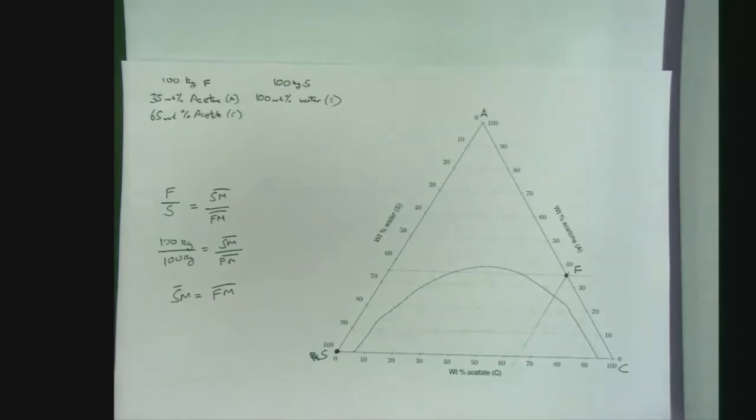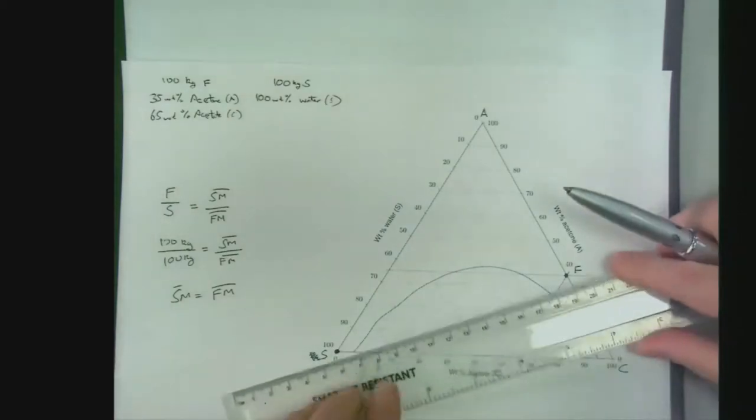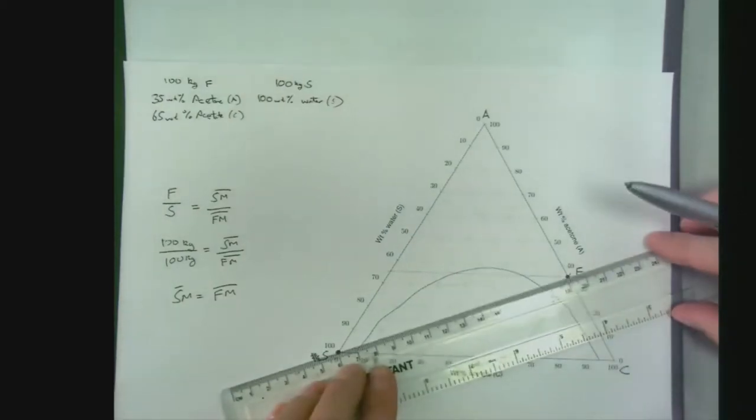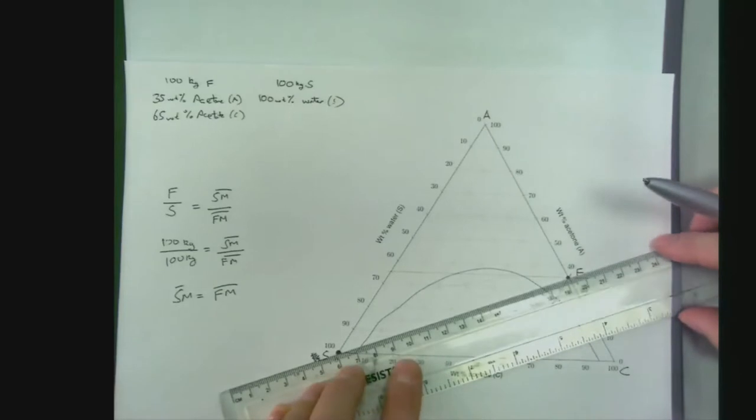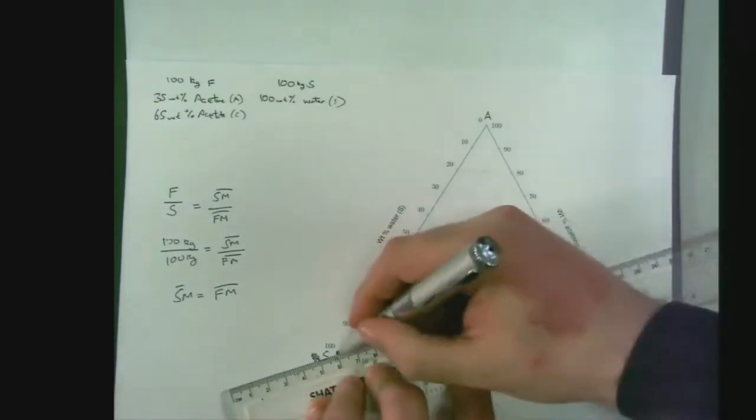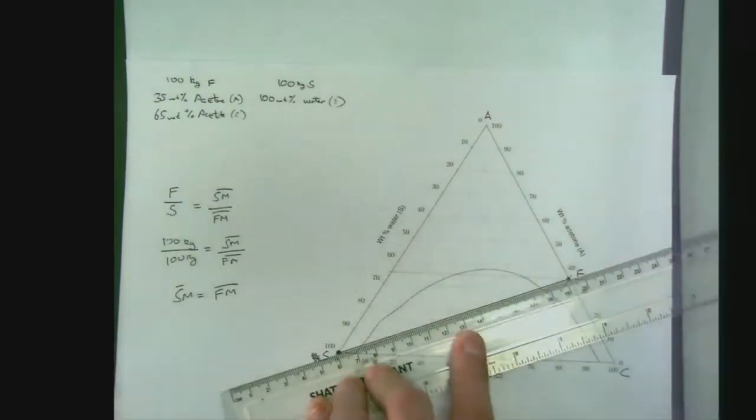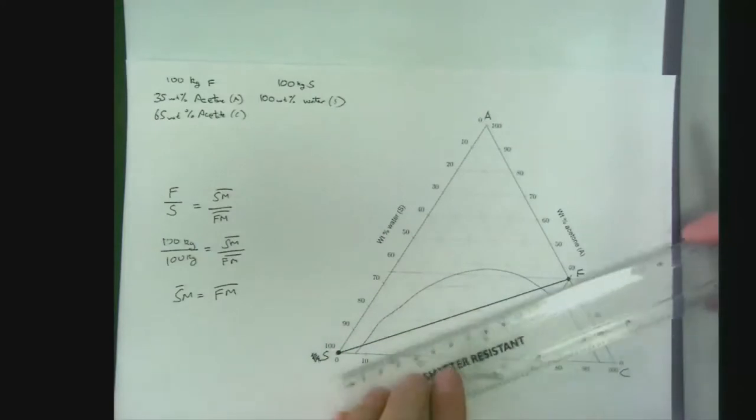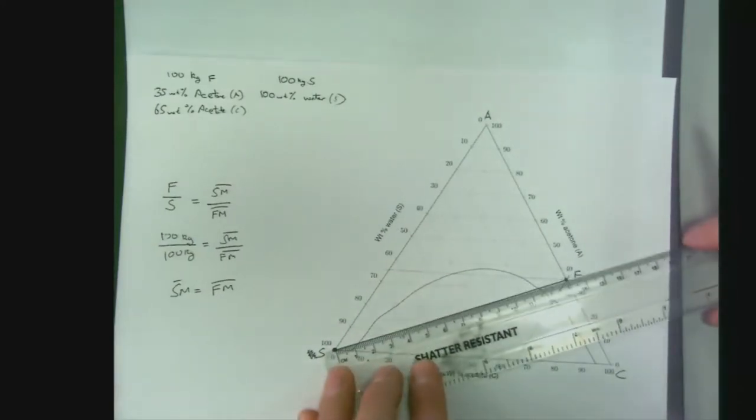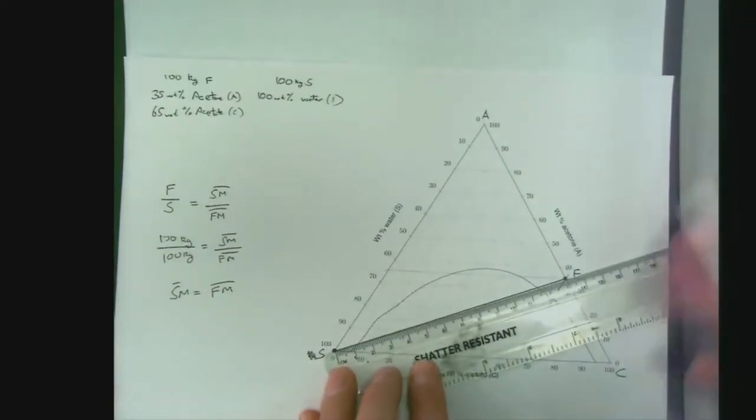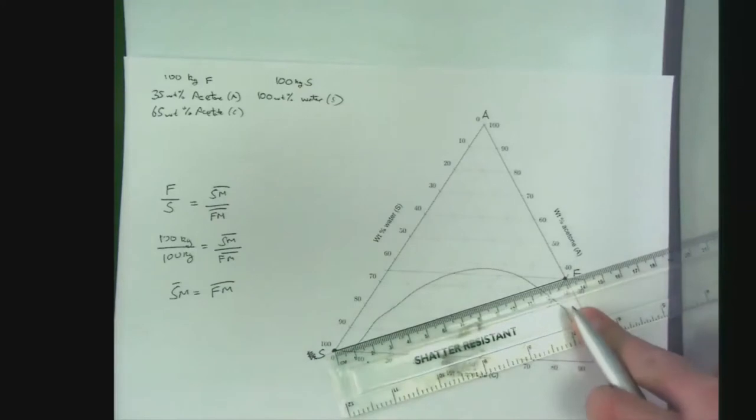We can get our trusty ruler out and draw our straight line between our solvent and our feed points. We can also read off the length of the line. In this case, it's 13 centimeters.